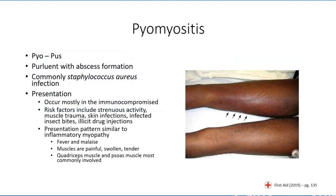Pyomyositis is a direct bacterial infection of skeletal muscle tissue, most commonly caused by Staphylococcus aureus infection. The term 'pyo' means pus, and reflects the purulent nature of the infection, which commonly leads to abscess formation. The condition is relatively rare, most commonly found as an opportunistic infection in the immunocompromised.